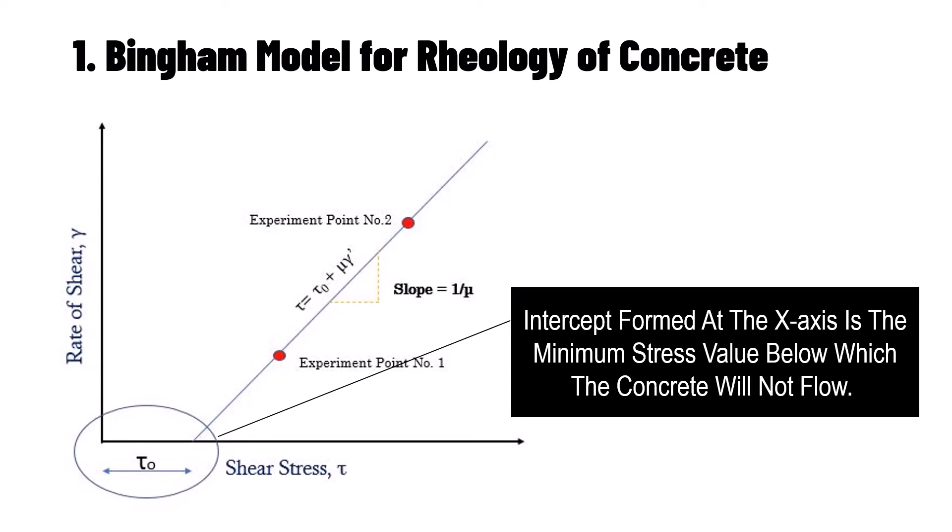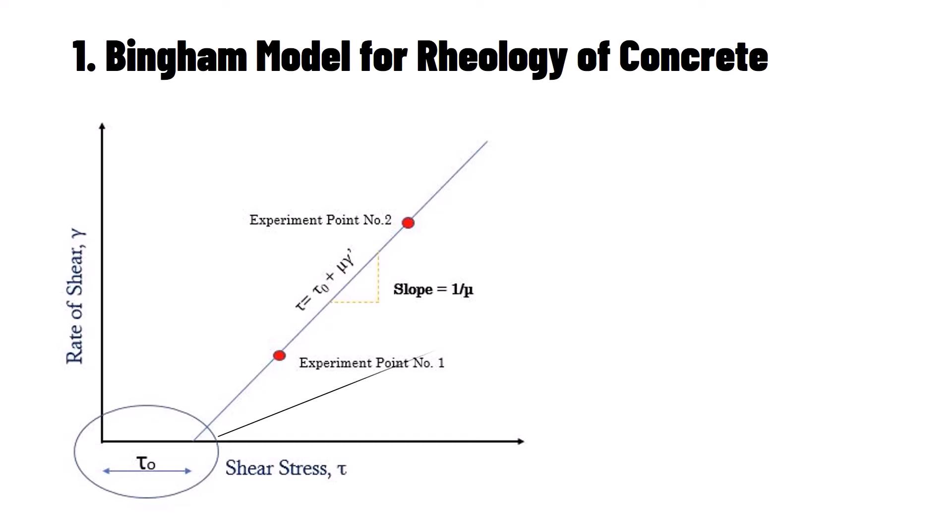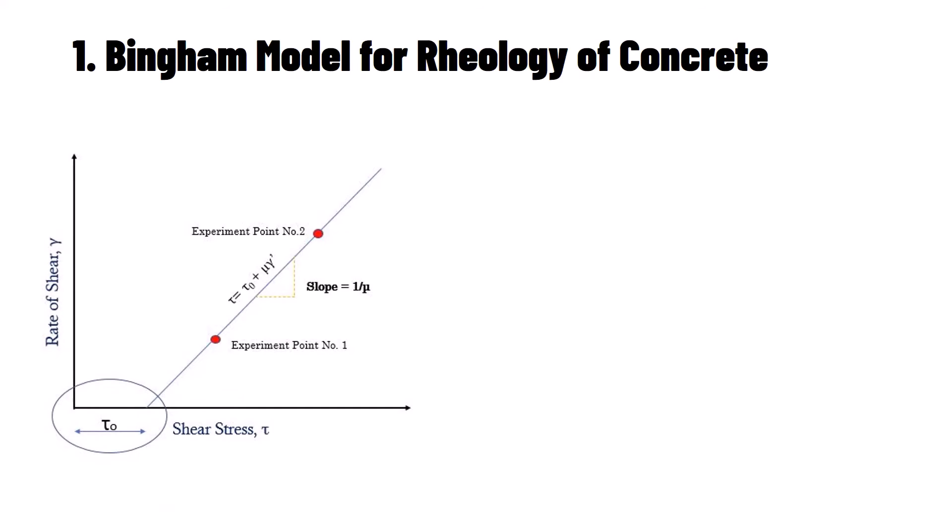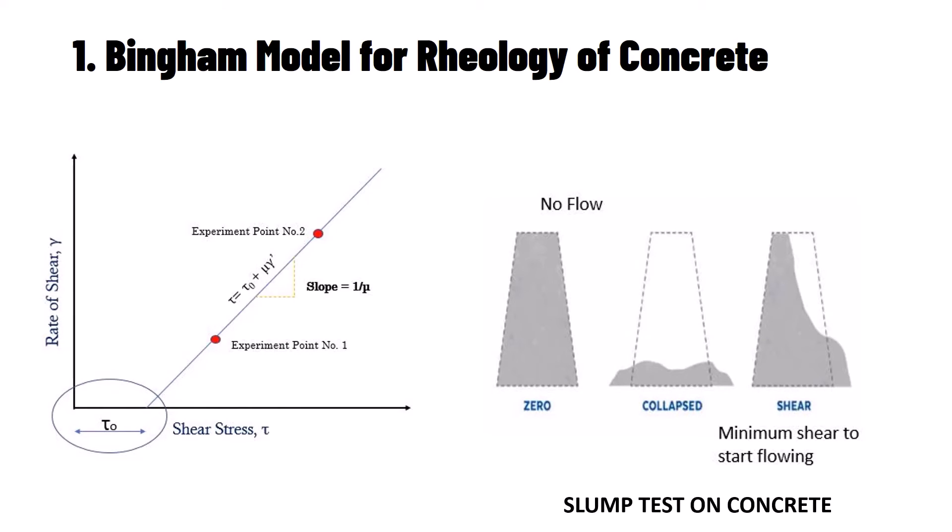It is the minimum shear stress below which the concrete will not flow. Now we consider an experimental condition where the concrete can stay in a pile while conducting a slump test. This means a minimum stress value for this concrete will make the concrete to flow. This minimum stress value of concrete to start flowing is called as the yield stress and it is designated by the symbol τ₀.